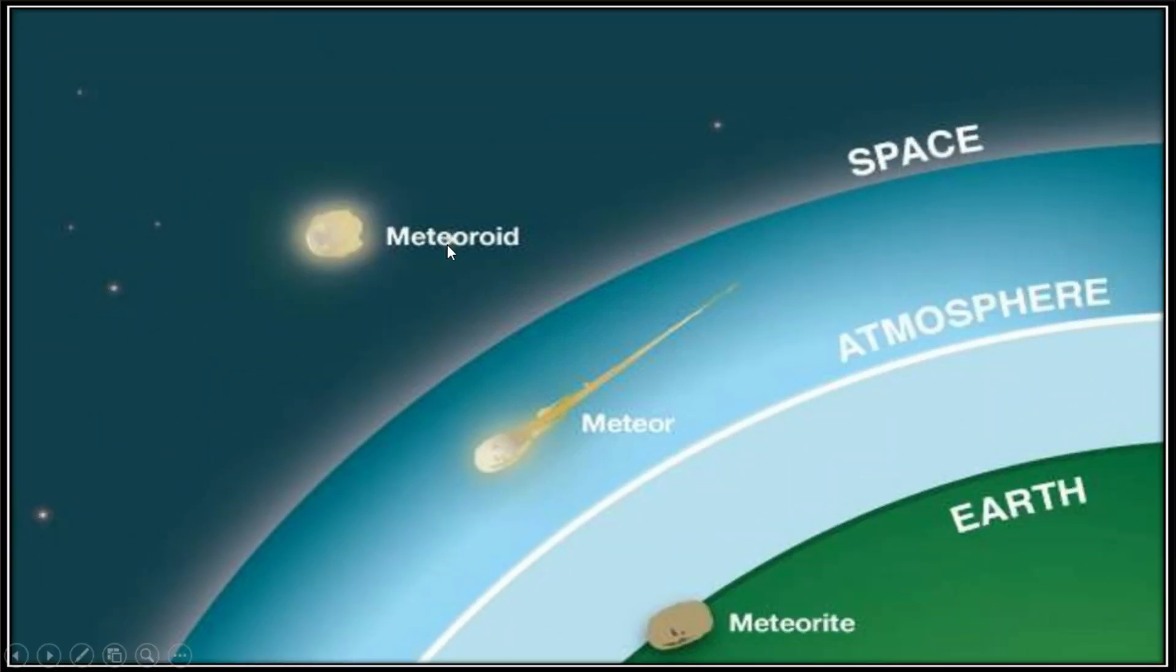Okay, this is the summary. A meteoroid is located in outer space. Once the meteoroid enters the Earth's atmosphere, it becomes a meteor. And lastly, once the meteor hits the Earth's surface, it will become a meteorite.